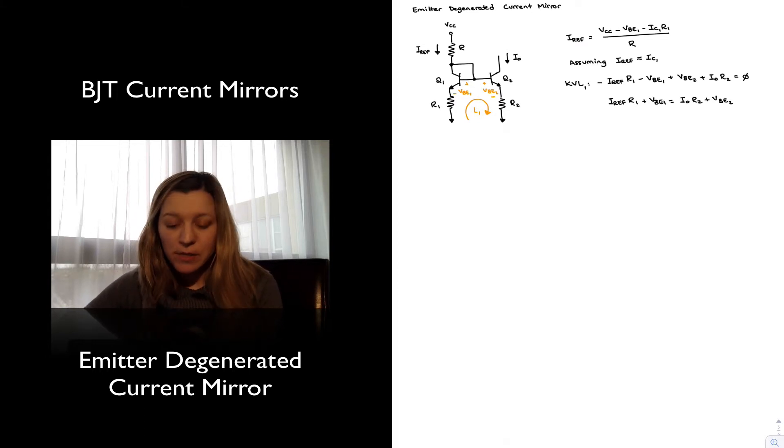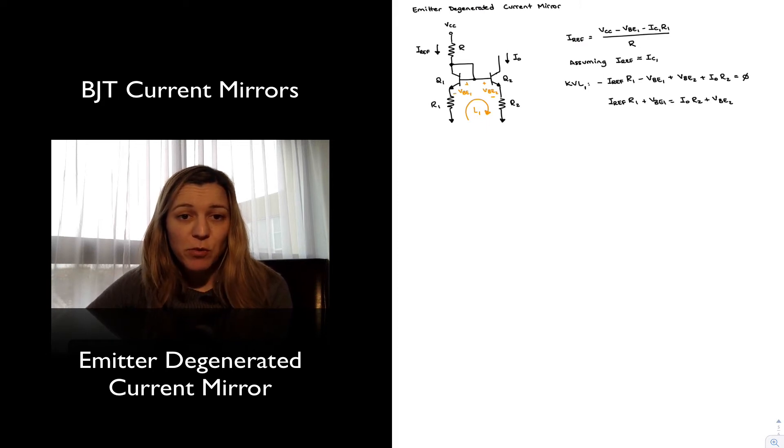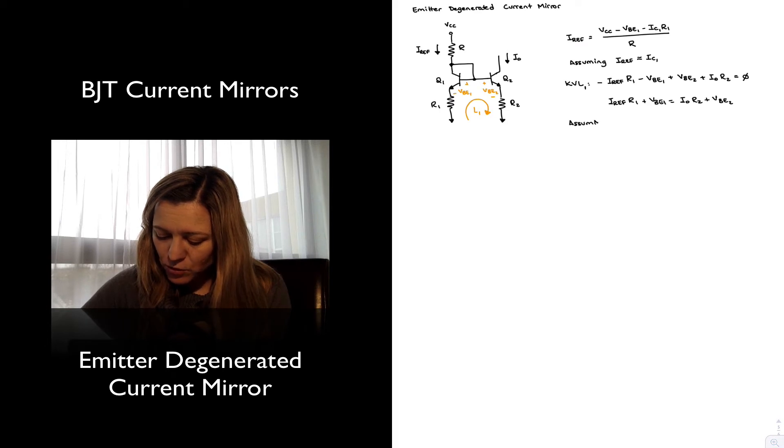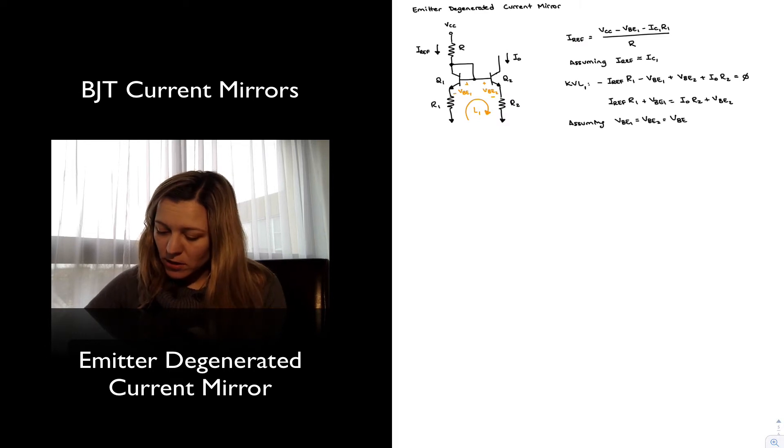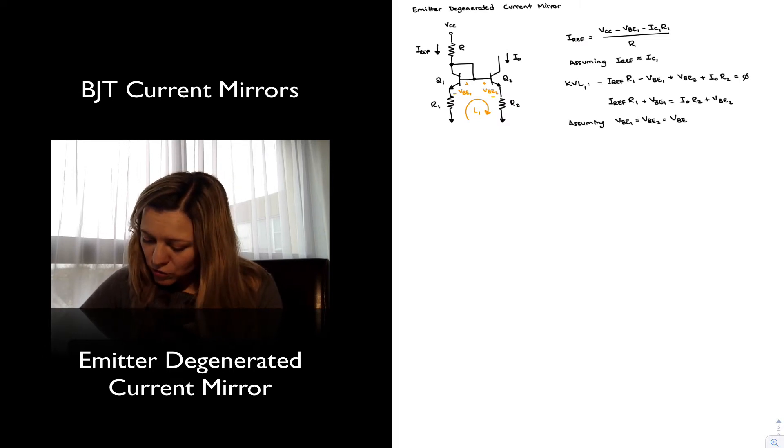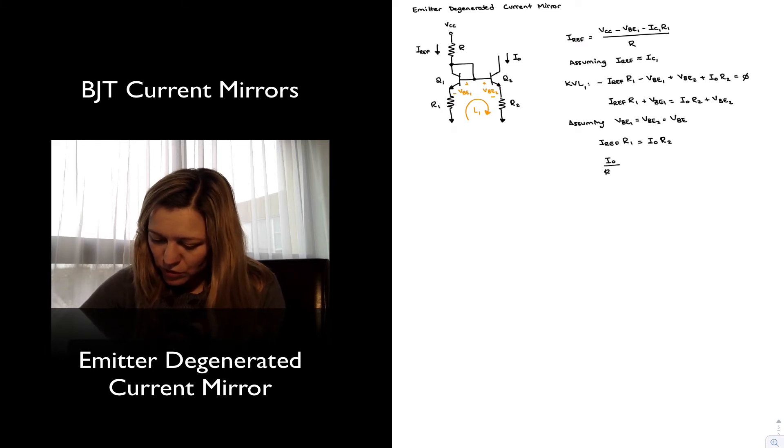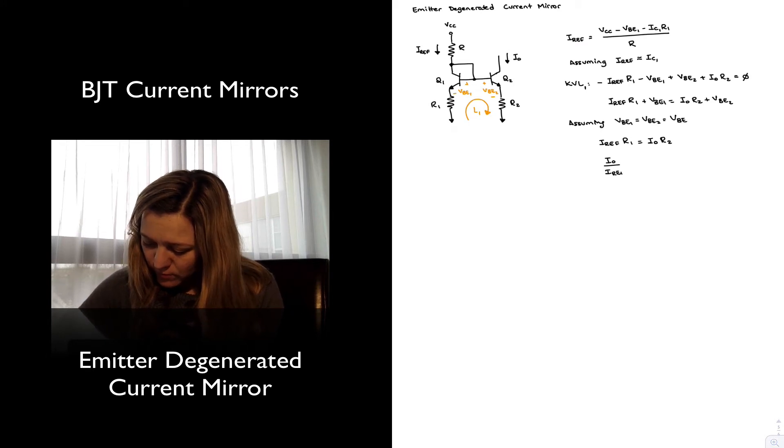And so my IREF R1 plus VBE1 will equal I out R2 plus VBE2. I've just rearranged the terms. Now if I'm assuming that these two transistors are well matched, so that the VBEs can be approximated as being equal, I can just express it as simply VBE, and I can replace that value into my equations, and I'll see that I'll end up with IREF R1 equals I out R2, where I out over IREF, my current transfer ratio, is equal to R1 over R2.